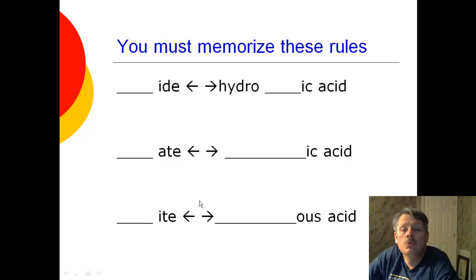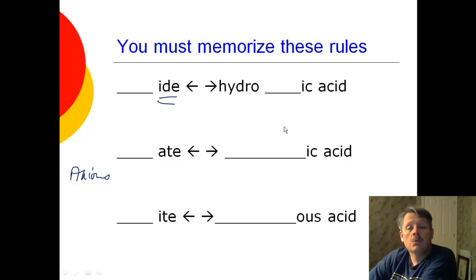You must memorize these rules. So pause the video, please. Write them down. The thing that's on the left, these are all anions. So if your anion ends in IDE, then your acid is going to be a hydroic acid. So write these down first, and then we'll go over it.